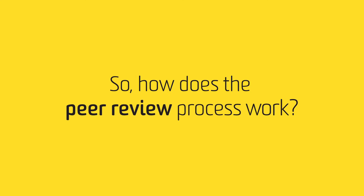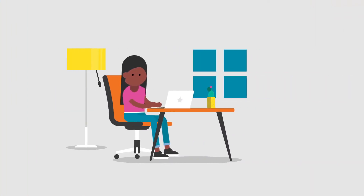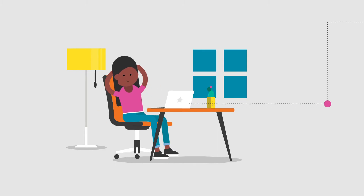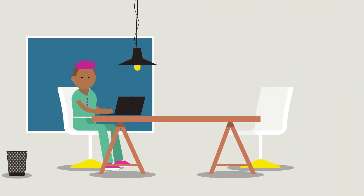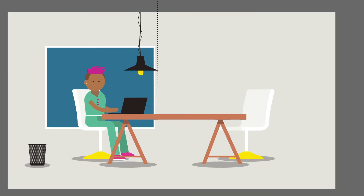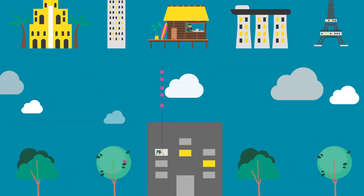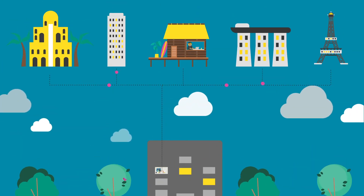So, how does the peer review process work? It can vary, but the process generally looks like this. An author begins by submitting a paper for publication in a peer-reviewed journal. The journal's editor assembles a panel of experts from the relevant field and invites them to evaluate and comment on the paper.